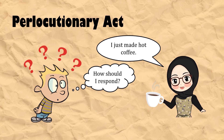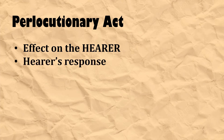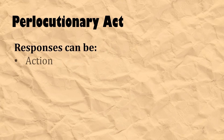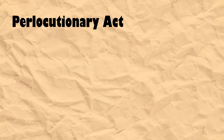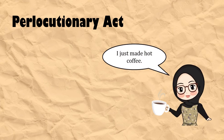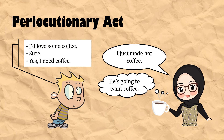How you respond to my offer of coffee belongs to the next level of speech act — the perlocutionary act. Perlocutionary act is the effect of what the speaker says on the hearer, the hearer's response. The perlocutionary effect or the response can be an action done by the hearer, an utterance, or even silence. Usually, the speaker already expects the outcome from the utterance. So when I say 'I just made hot coffee' as an offer, I have already expected that you would like some coffee. Commonly, the response will be in line with what the speaker has anticipated — so you'll probably respond 'I'd love some coffee,' 'Sure,' 'Yes, I need coffee,' or other similar responses.